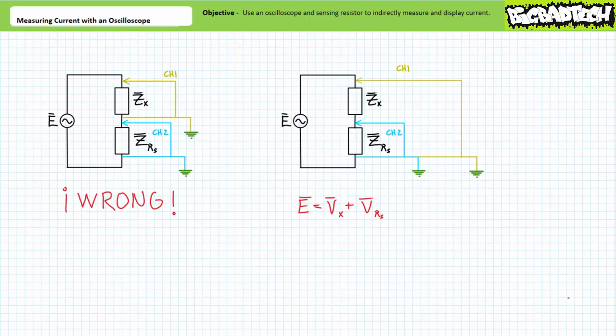Given this assumption, it can be said that all voltage will be dropped across the element of interest. We can represent this assumption as follows. Given our earlier exploration showed us that E equals VX plus VRS, if we assume the voltage drop across the small sensing resistor is sufficiently minor in comparison to that of the larger element of interest, we can state that the source voltage rise is approximately equal to the voltage drop across the element of interest. While not entirely true, this assumption significantly simplifies the remaining calculations.